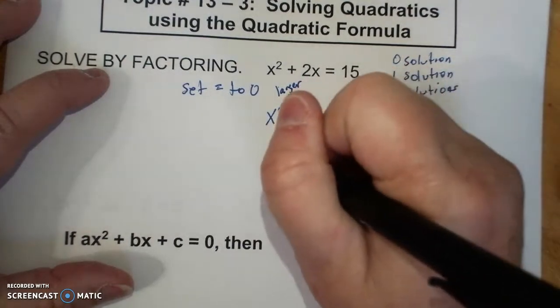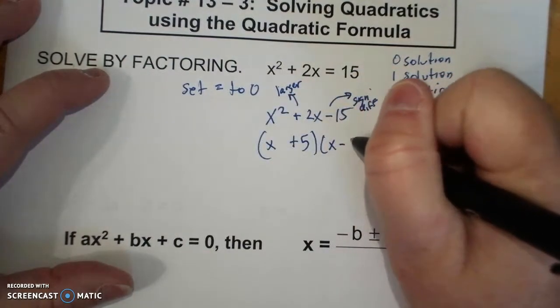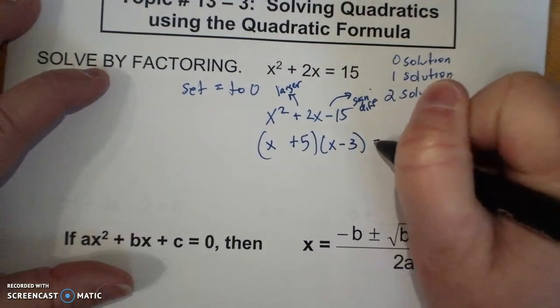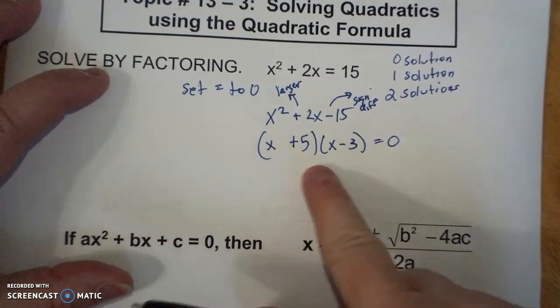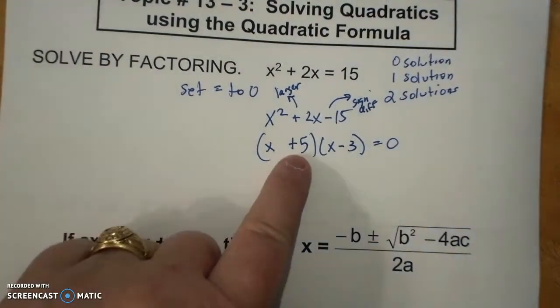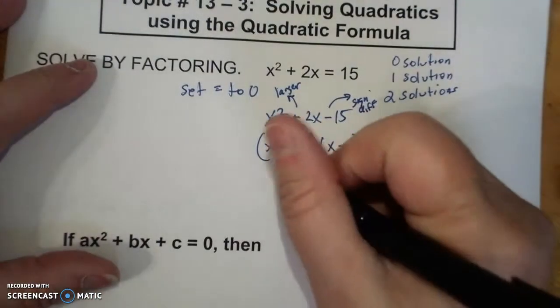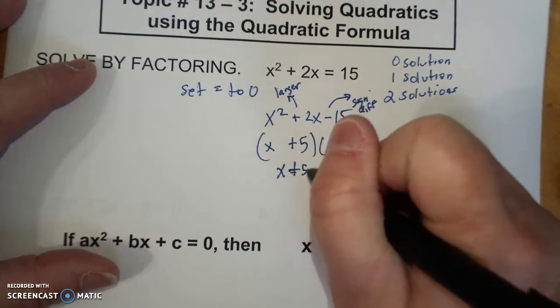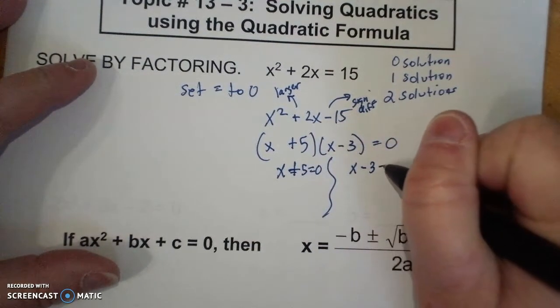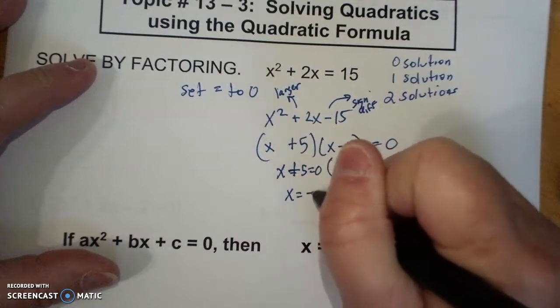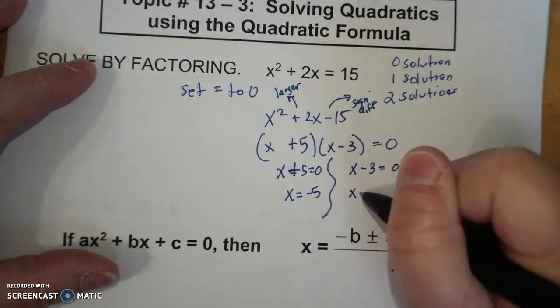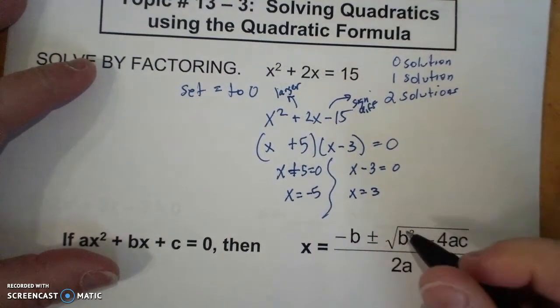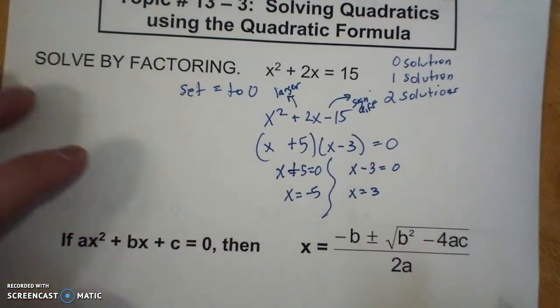And that's 5x and minus 3x. And that's the sign of the larger looking one. So x plus 5 equals 0, x minus 3 equals 0. x equals negative 5 and x equals 3. So your answers are negative 5 and 3.